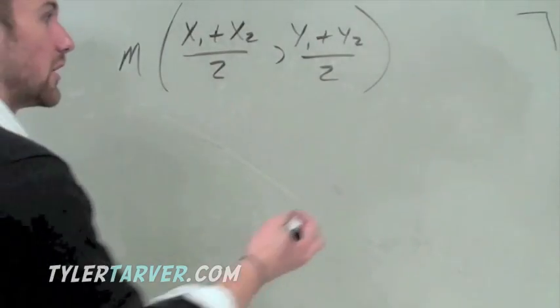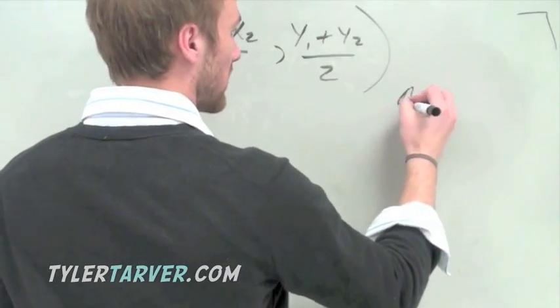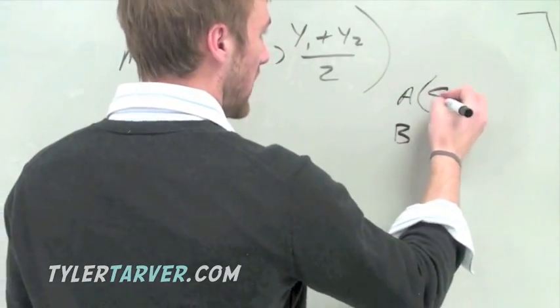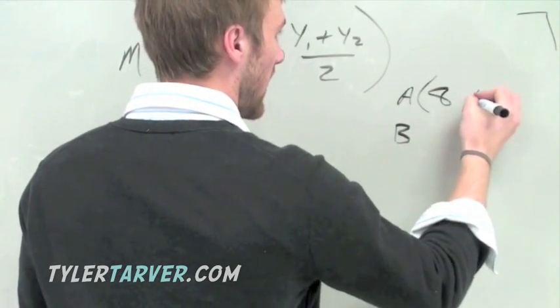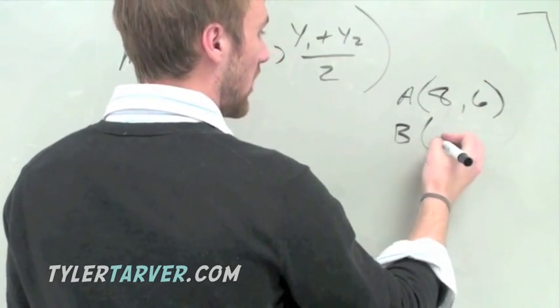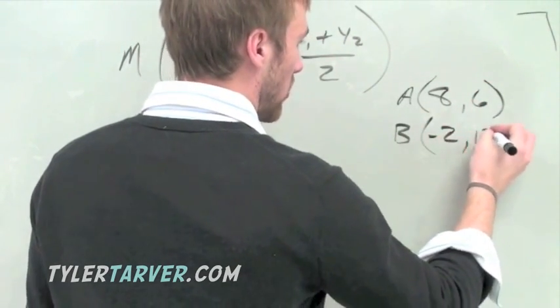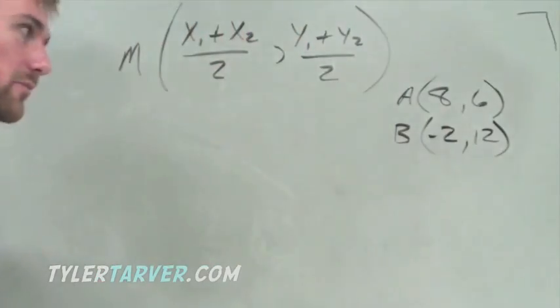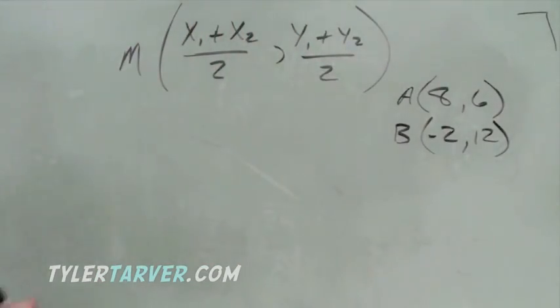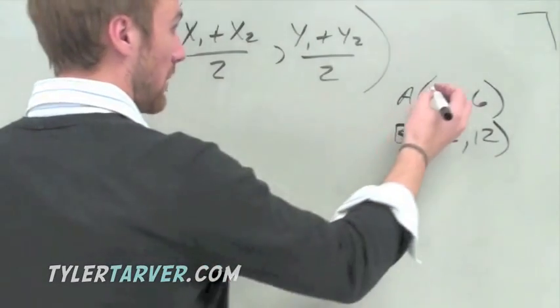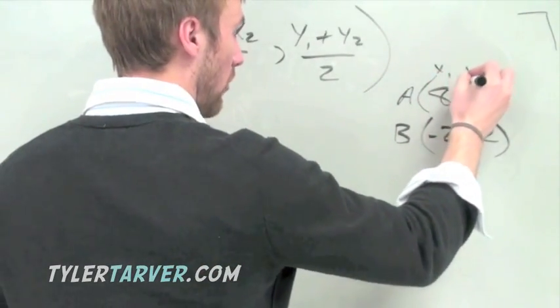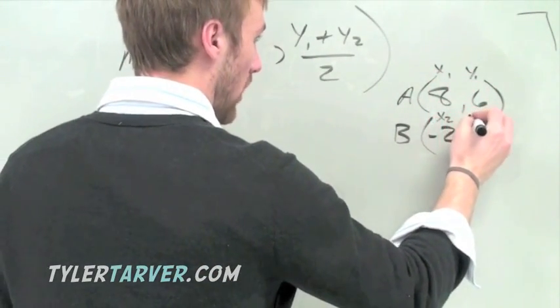So let's try it out. See if we can do it. First thing we need is our points. We'll do points A and B, which A will be 8 and 6. And B will be located at negative 2, 12. Let's find the midpoint of these little guys. First thing we do, we label our stuff: x1, y1, x2, y2.